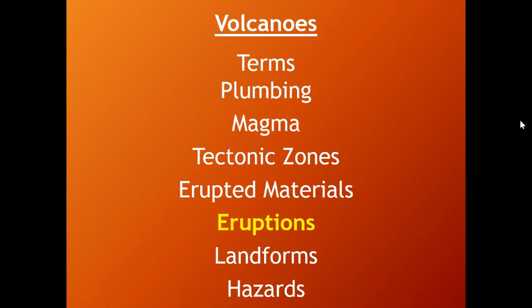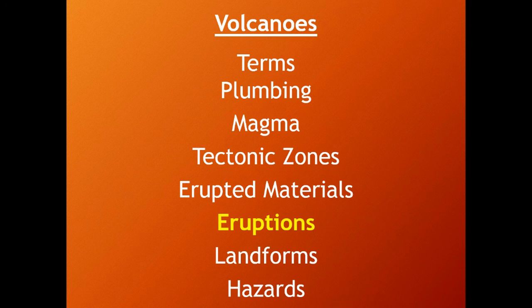That's it for today. We'll talk about eruptions, landforms, and hazards next time. We talked volcanic terms like magma and lava, volcano and vents; magma types — basaltic, andesitic, and rhyolitic; tectonic zones — divergent boundaries, hot spots, and subduction zones producing volcanic arcs and island arcs; and eruptive materials — lava flows including pahoehoe, aa, and pillow lava; and pyroclasts and tephra. Tephra is the small stuff; pyroclasts is the bigger material. Thanks for listening.